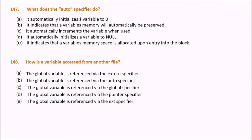What does the auto specifier do? Auto is a storage class. We normally just write 'int x = 0' without explicitly writing 'auto'. The answer is B: it indicates that the variable's memory will be automatically preserved.